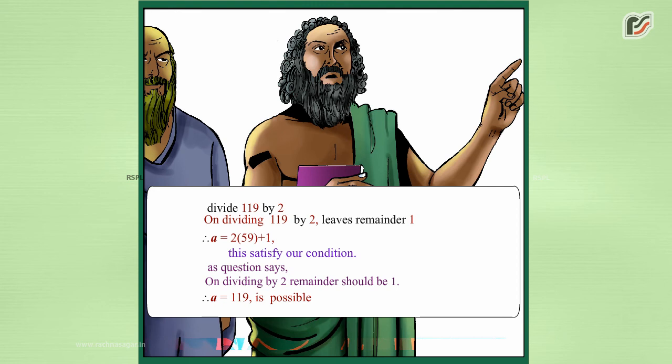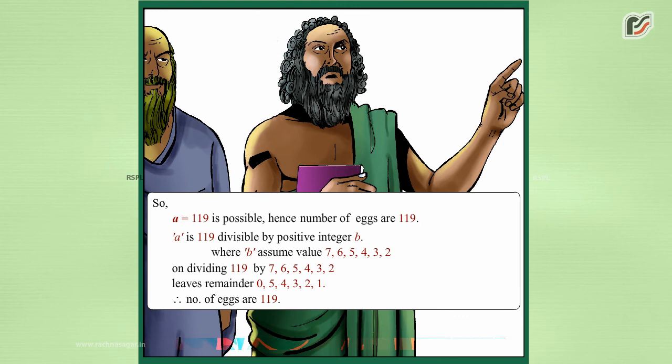Dividing 119 by 2 leaves remainder 1. Therefore a equals 2 times 59 plus 1. This satisfies our condition, as the remainder on division by 2 should be 1. Therefore a equals 119 is possible.